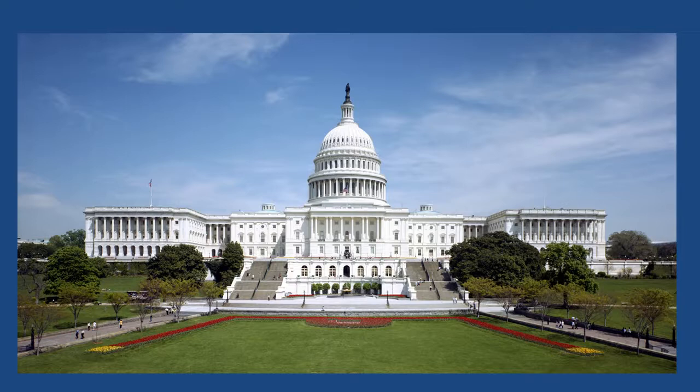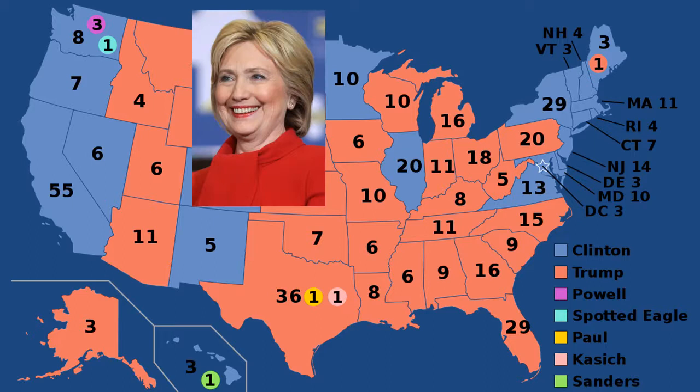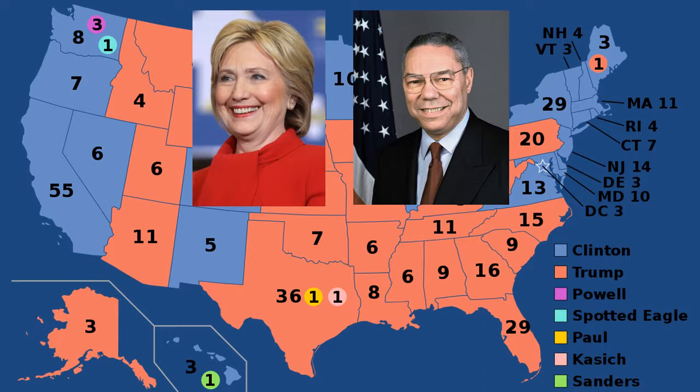However, there are exceptions. In 2016, Hillary Clinton lost four electoral votes in Washington State, a state she had won, with three electors who instead voted for the former Secretary of State, Colin Powell, and one who voted for the Native American activist, Spotted Eagle.